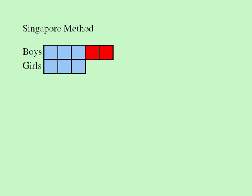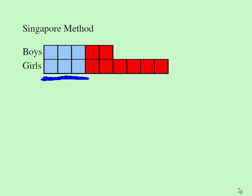According to the question, one-third of the girls were born in Georgia. This is another important step: this three represents one-third of all the girls in the class. If one-third of something is three, that something has to be nine. So if we choose nine squares for girls, one-third of nine is three — it works out.